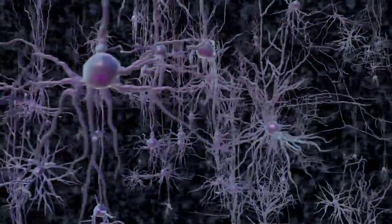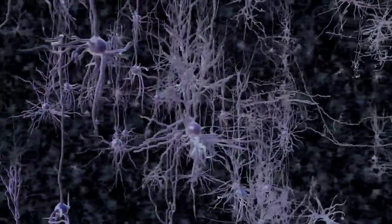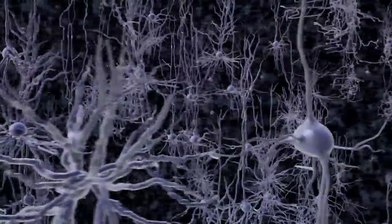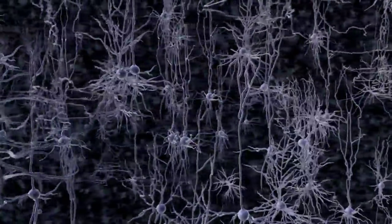Neurons come in thousands, perhaps tens of thousands of different kinds, each with a unique shape, a distinct molecular composition, and a unique pattern of connections within the brain.